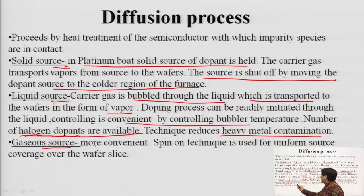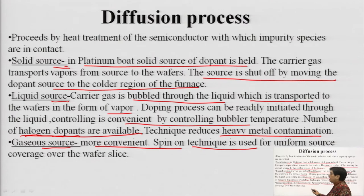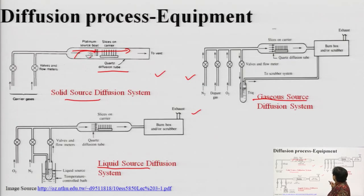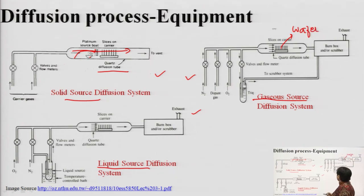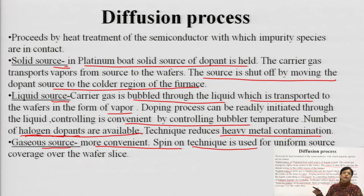The third type is the gaseous source. It is very convenient, and to have uniform coverage, we make use of the spinning technique. The wafers are exposed to gaseous dopant species. To uniformly coat the wafer surface, we ensure the wafers are also spin coated. Since they are exposed uniformly to the dopant species, the dopant profile will be uniform throughout the exposed area.